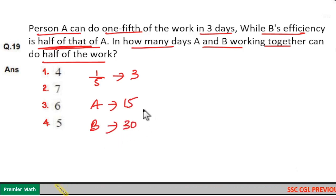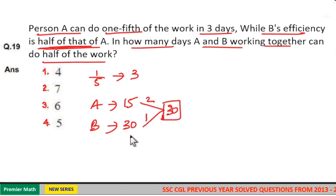= 30 days to complete the same work. Now, when both are doing the same work, take the LCM. LCM is 30. 15 goes 2 times in 30, and 30 goes 1 time in 30. That is, total work is 30 units, and A can complete 2 units of work in a day.